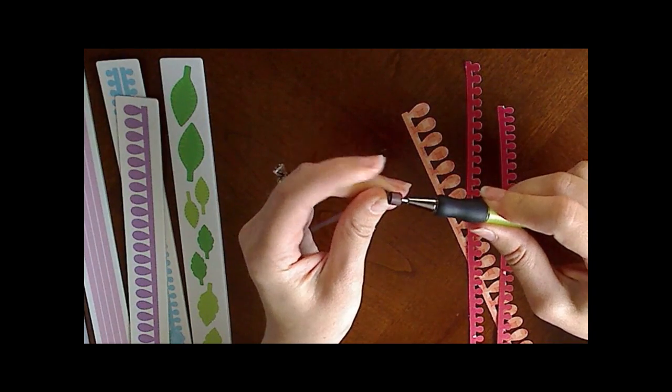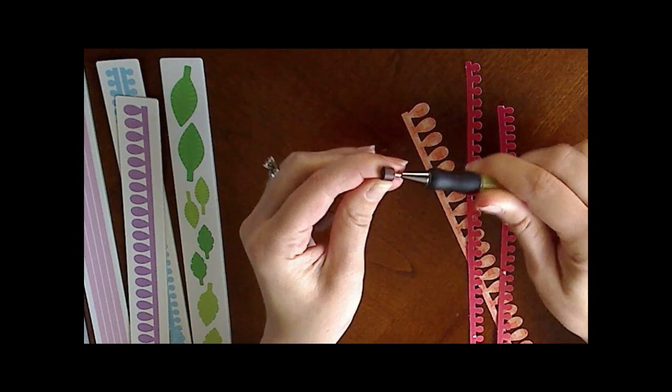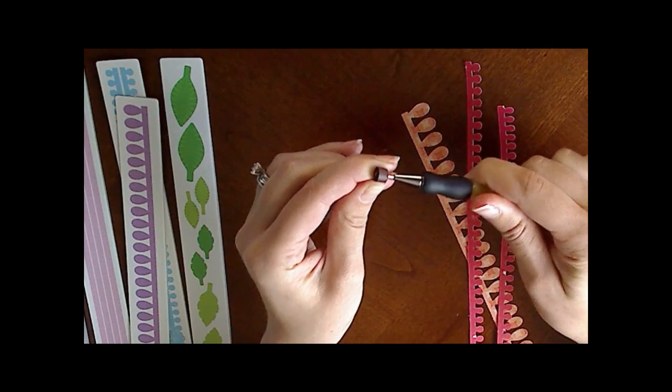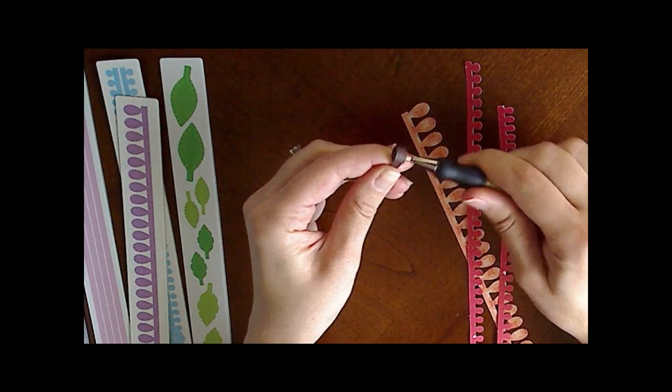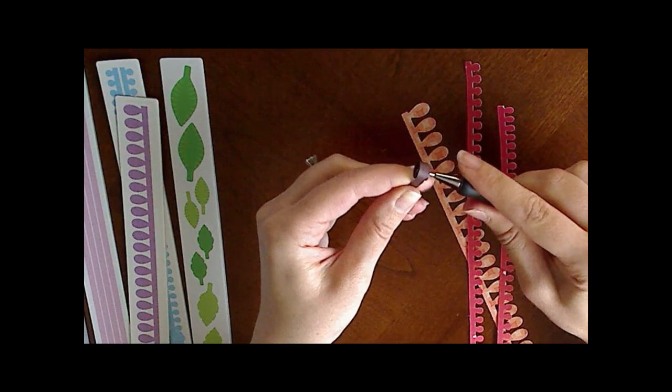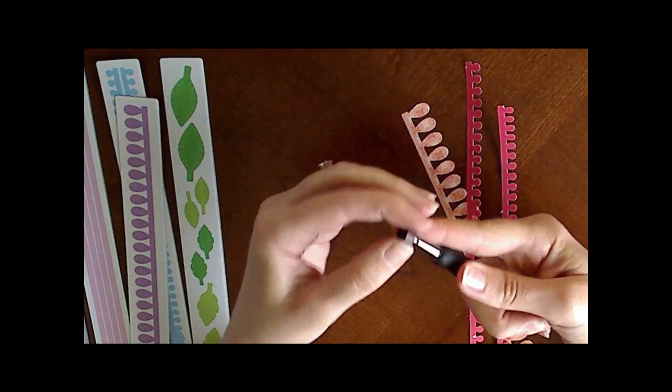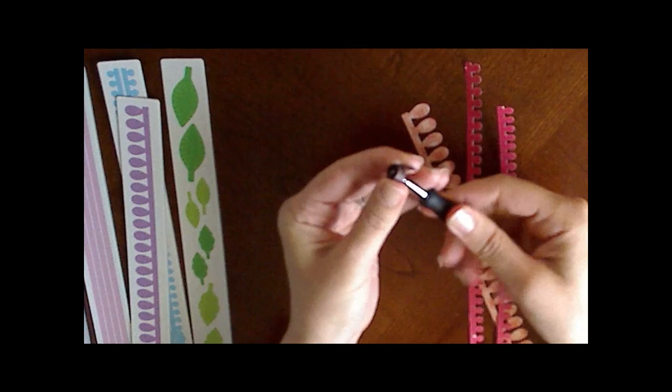Now you can add little drops of glue as you go along if you want a really tight, secure flower. It depends on what you're using it for. But you can do that or you can just wait until you get to the end of the strip and then put a little dollop of glue right there.